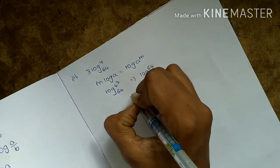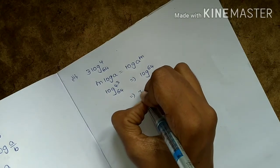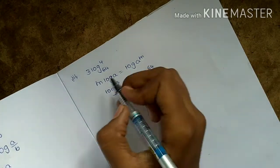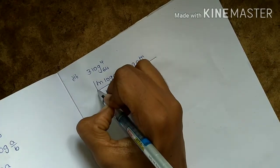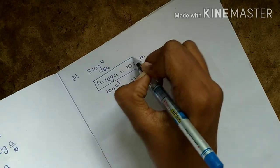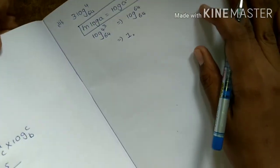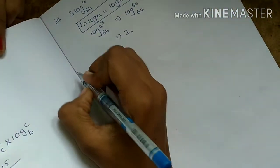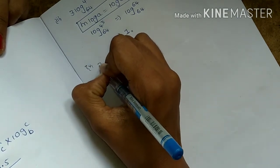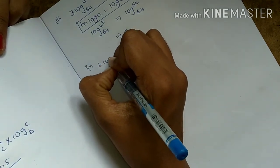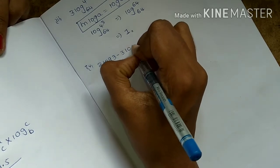So the answer is 1. Next: 2 log 3 minus 3 log 2. Using the same formula m log a, this becomes log 3 squared minus log 2 cubed.